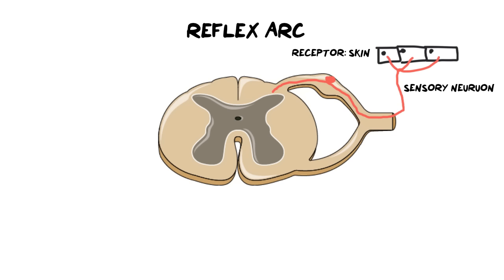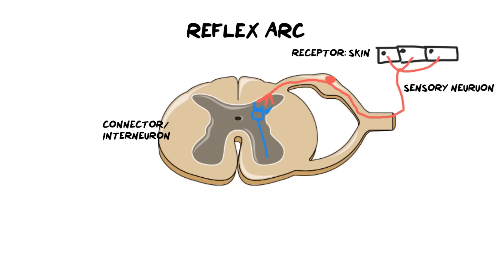Once that information comes into the spinal cord, it now needs to be transported into the actual spinal cord, because the spinal cord is going to make the decision — not the brain. So we need a specialized neuron. This specific specialized neuron sits in the gray matter, the full length of it. An integrative measure needs to be taken, and so we call these neurons either connector neurons or interneurons. This is where we make our decision. The spinal cord says: we are putting our hand on a hot plate, we are hurting ourselves, we need to move.